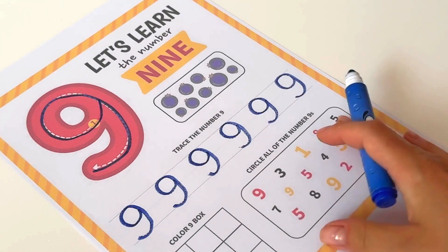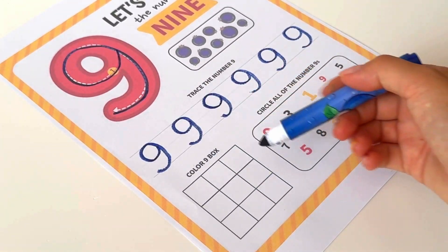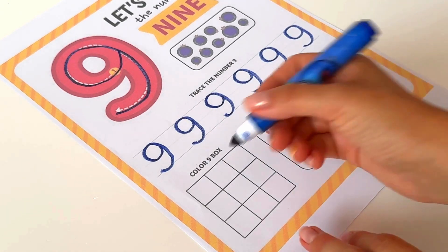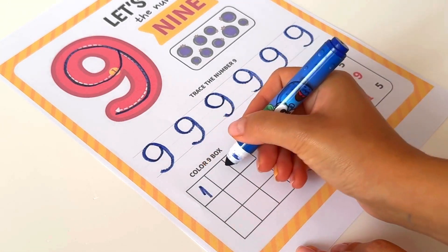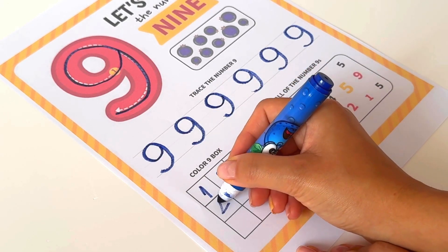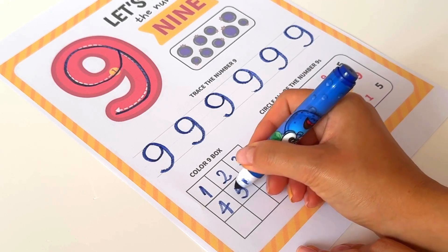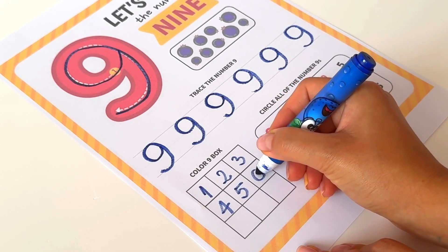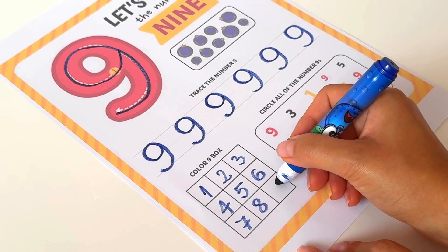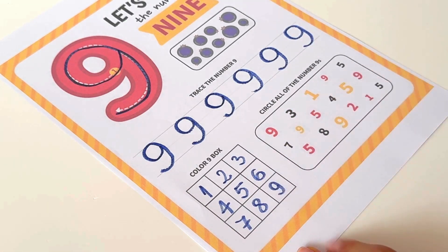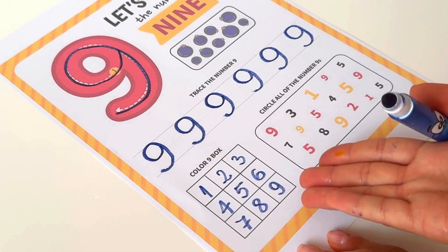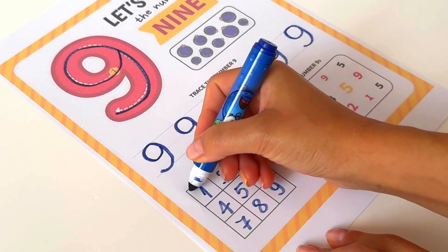Here in this square we have the color nine boxes. Let's count. One, two, three, four, five, six, seven, eight, and nine. Basically we have to color all the boxes because we have nine boxes. I'm gonna start with color blue.